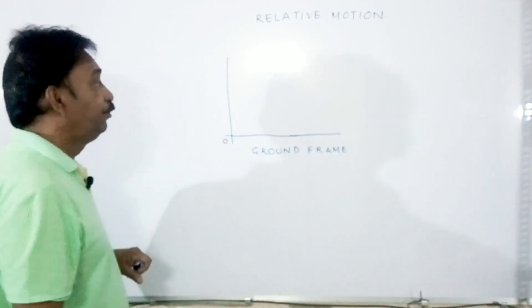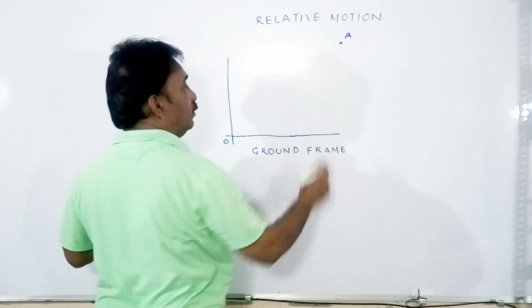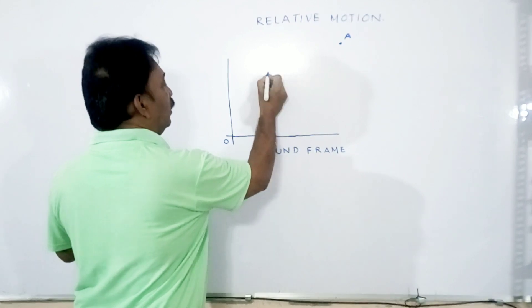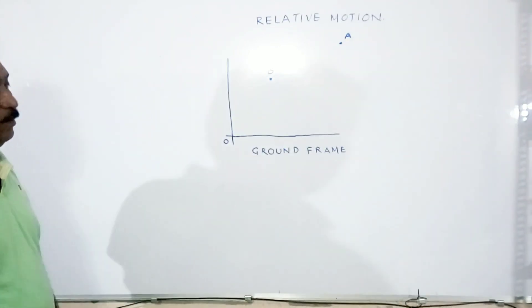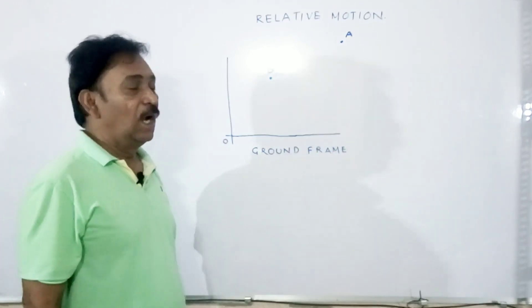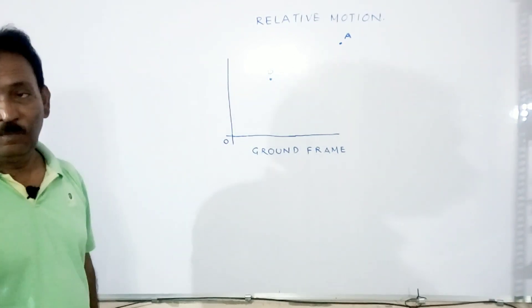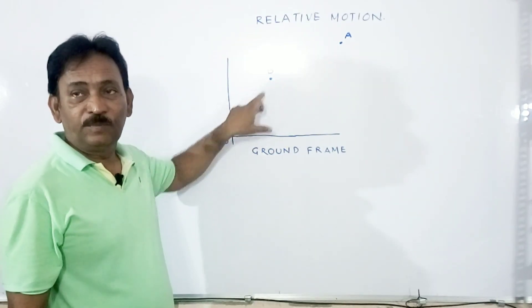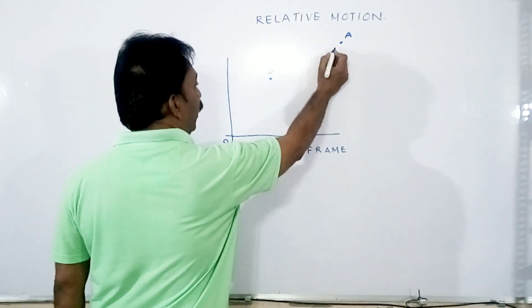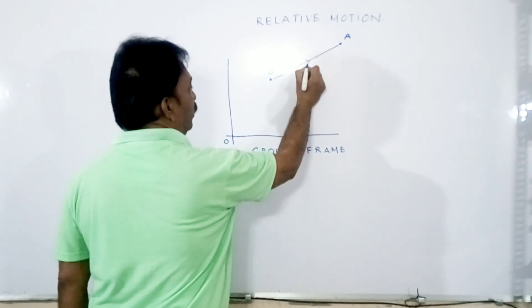Now think: an aeroplane is flying here — I am calling the aeroplane A — and a balloon is here, which we call B. Here, there is a probability of observing the aeroplane in two different ways: with respect to the balloon, and with respect to the ground. Right now, what I am doing is connecting A and B with a position vector.